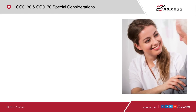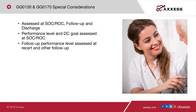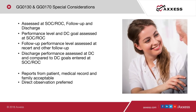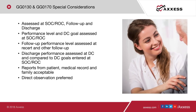GG0130 and GG0170 have special considerations. These are assessed at start of care, resumption of care, follow-up, and discharge. At start of care and resumption of care, you assess the patient's performance level and a discharge goal for each activity. Follow-up performance is assessed at recertification. Discharge performance is compared to the discharge goals established at start of care. Reports from the patient, medical record, and family are acceptable, but direct observation is preferred.